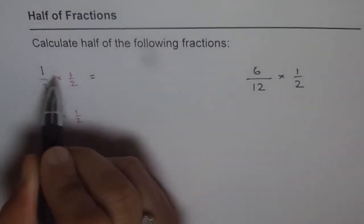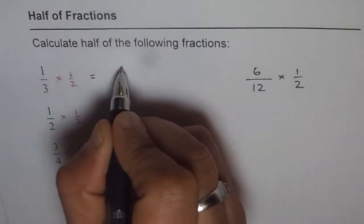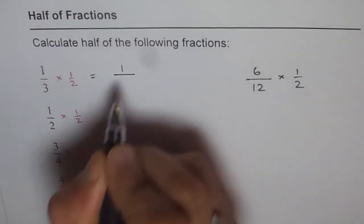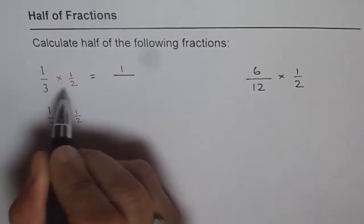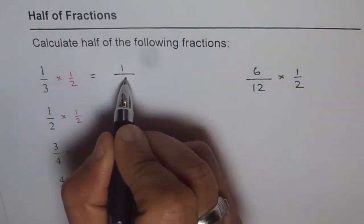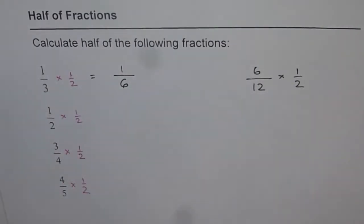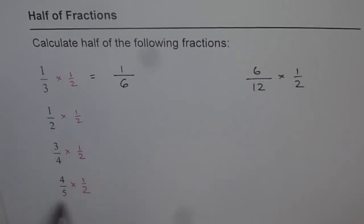So what do we get? 1 times 1 is 1 in the numerator, 3 times 2 is 6 in the denominator. It is so simple as that. I'd like you to pause the video at this stage and do the rest of the questions on your own. Once you have done, check the answer.